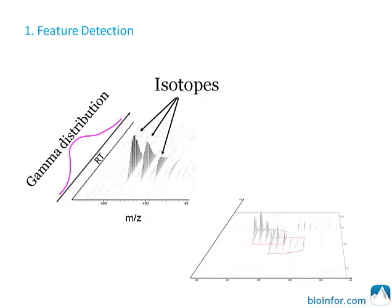The first step is feature detection. A peptide feature is defined as a group of peaks in a heat map characterized by elution patterns in terms of retention time and isotope patterns in terms of mass-to-charge. The deconvolution of overlapping peptide features and retention alignment between runs are the key factors for data analysis.